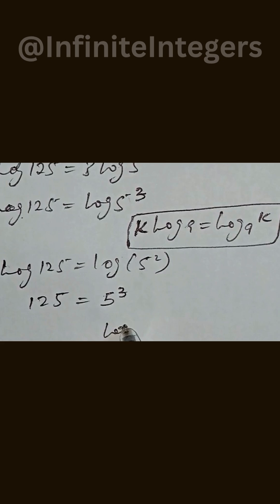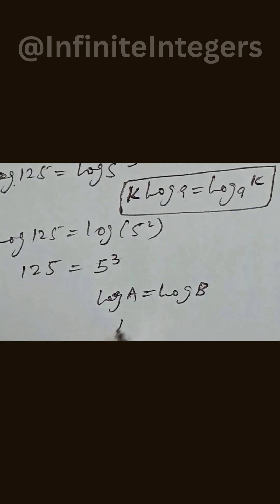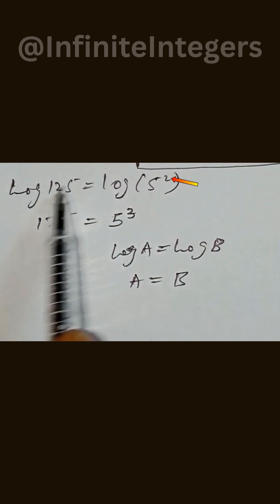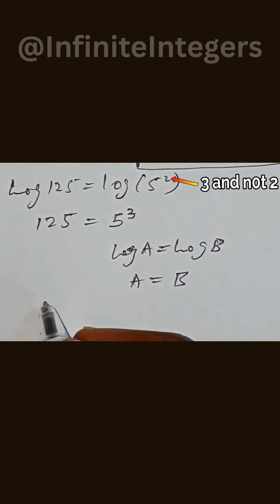If we have log a equal to log b, we can simply write a equal to b. This is a log property, the one-to-one log property, which makes this become this. So we can now write this as...